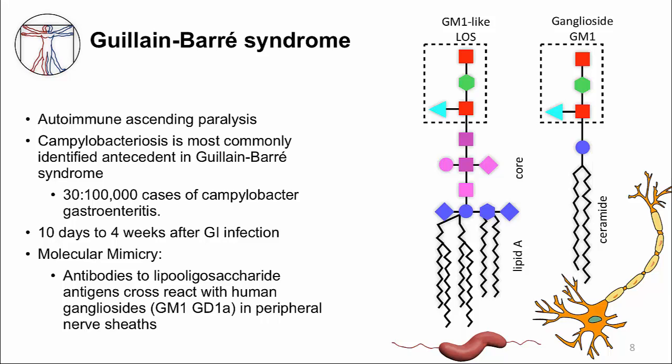You can also have paresthesias, but sensory abnormalities are mild. Antibodies made during Campylobacter infection against parts of the outer cell membrane — specifically against Campylobacter lipooligosaccharide antigens — cross-react with human gangliosides in peripheral nerve sheaths. The gangliosides are part of the membrane of nerve cells. The same antibody binds to both the Campylobacter antigen and the nerve cell antigen. This phenomenon is called molecular mimicry.